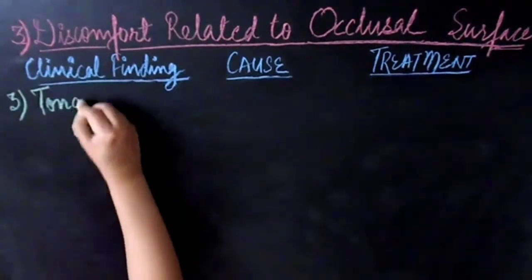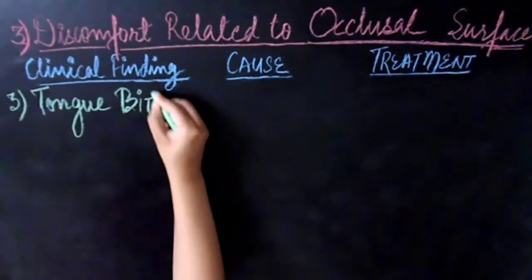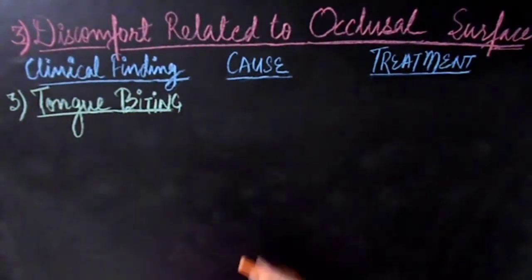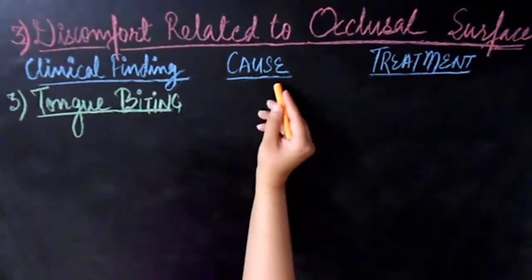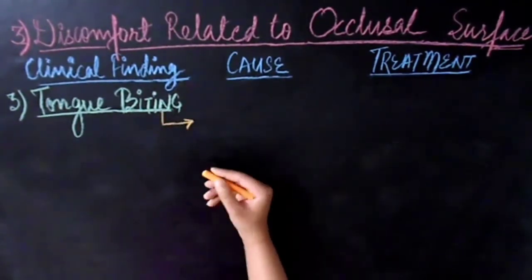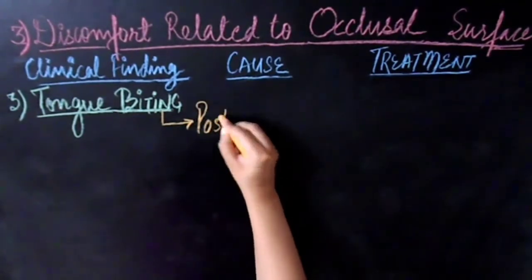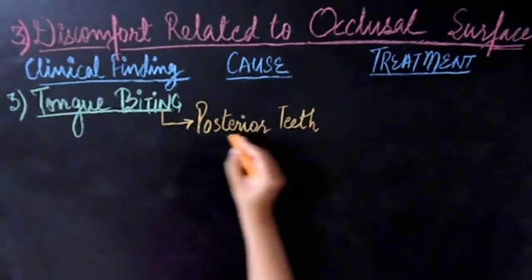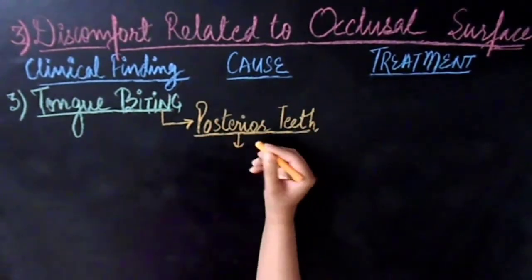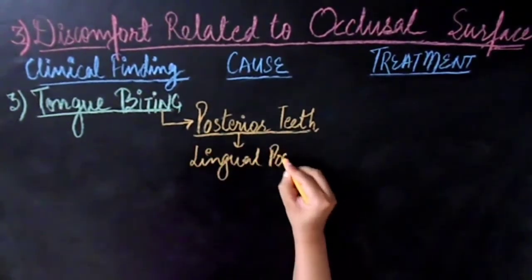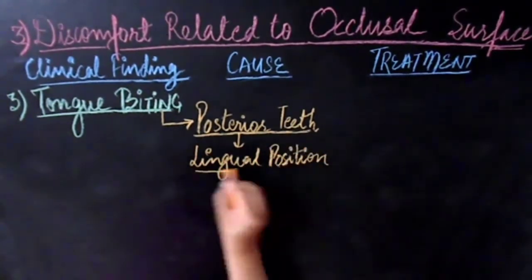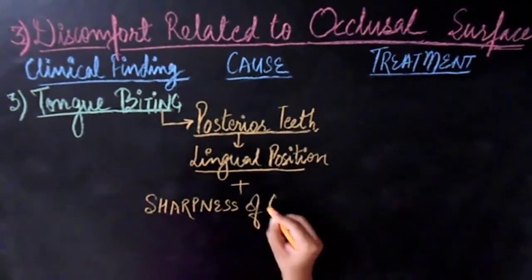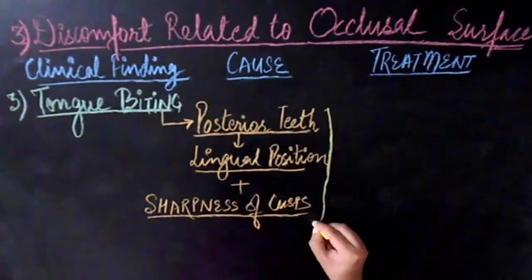Another common complaint related to the occlusal surface is tongue biting. It usually occurs due to a combination of posterior teeth being placed in a lingual position together with sharp cusps. This can be treated by reduction and smoothening of the teeth on the lingual aspect.